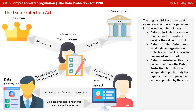The original 1998 Act covers data stored on a computer or paper and introduced a number of key roles. Firstly, there's the Data Subject — the person who has data about them stored somewhere outside of their control, so typically you can think of yourself as a Data Subject. Then we have a Data Controller, which determines what data an organisation collects and how it's collected, processed or stored. There's also the Data Commissioner or Information Commissioner, the person who has the power to enforce the Data Protection Act — an independent public body that reports directly to Parliament and is appointed by the Crown.